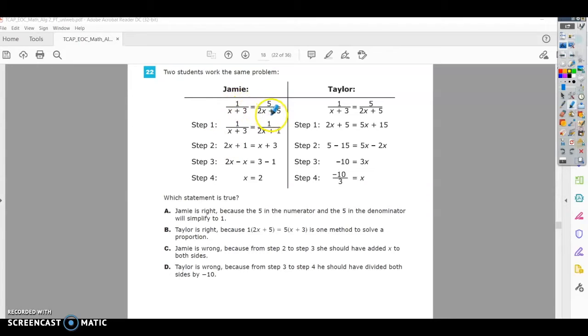I have an equation here and I know that I can cross multiply to work this out. In step one, they didn't change the left side. But I can see that they changed the 5 to a 1, and that changes the whole equation.